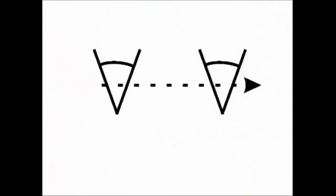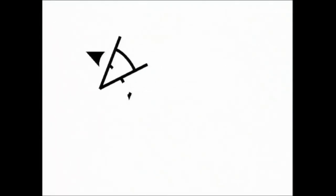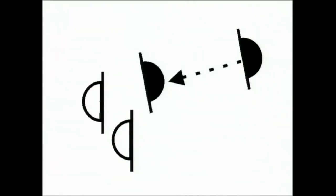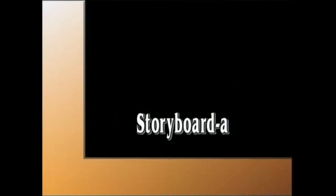Kameraren mugimendua agertzeko, honela egingo dugu. Eskuinetik ezkerrerako panoramika honela adieraziko dugu. Kontrako norabidekoa, honela. Pertsonaiak zeinu honen bidez ordezkatzen dira. Lerro zuzena aurpegia da. Pertsonaien mugimendua berriz, zeinu honen bidez.